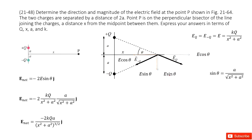And then for E_negative_q, this vector can also be projected: the x-component is E cosine theta and the y-component is E sine theta. So where does this E come from? E is the magnitude of the electric field for E_q and E_negative_q. It is just k times q divided by the distance squared.